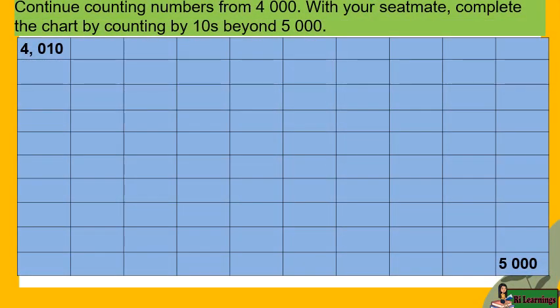Continue counting numbers from 4,000. With your seatmate, complete the chart by counting by 10s beyond 5,000.